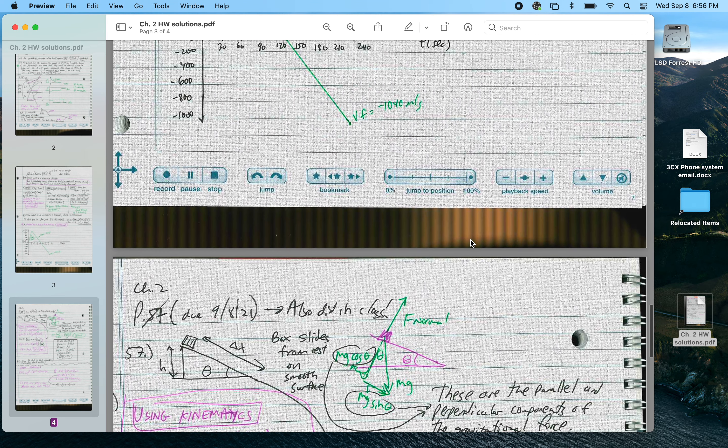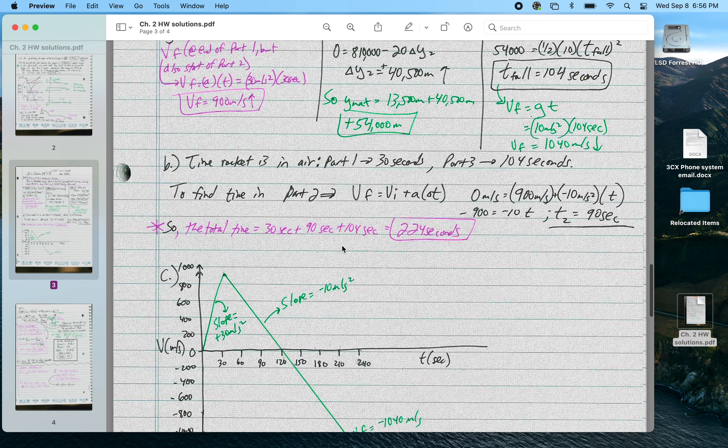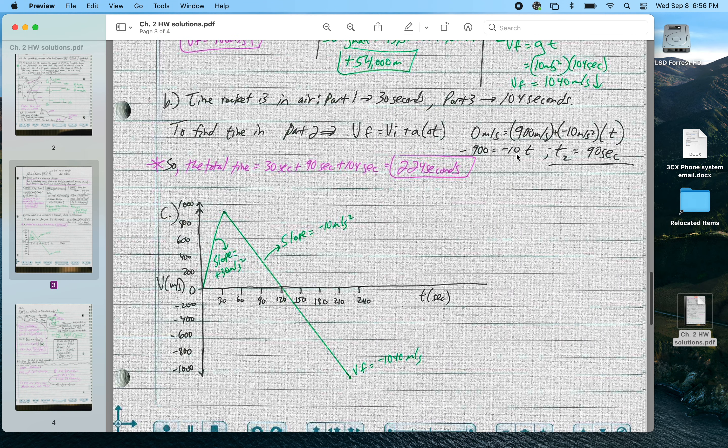Next, oh, and this is the graph. Slope here, plus 30 meters per second squared. Slope here, negative 10 meters per second squared. We finish off at negative 1,040 meters, as noted, or meters per second, as noted up here.